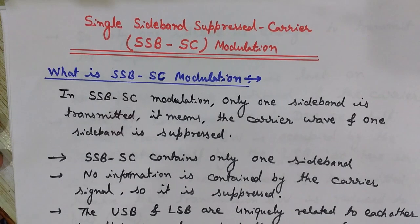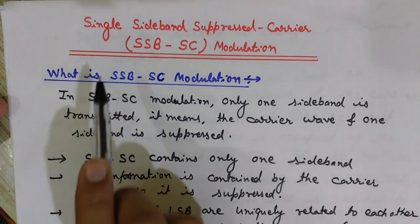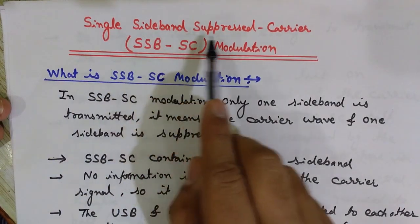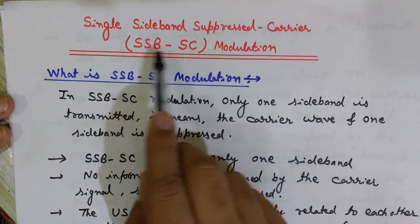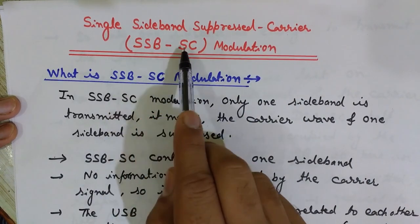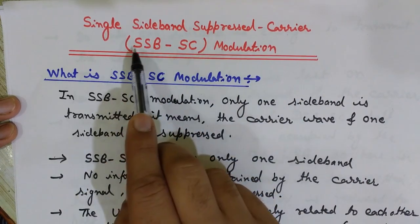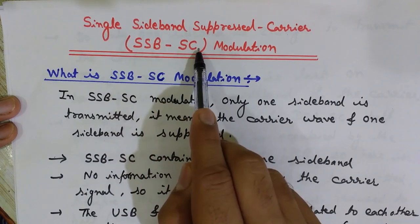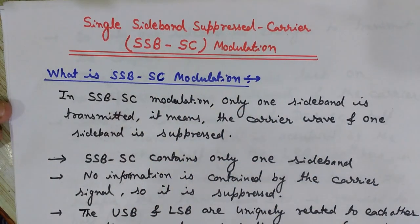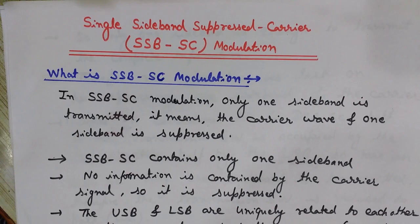Hello friends, welcome back to Engineering Made Easy. I'm Lalith. Today we will discuss single sideband suppressed carrier, known as SSB-SC. It is a technique of amplitude modulation. In the last lecture we discussed double sideband suppressed carrier DSB-SC, but here we are going to discuss SSB-SC.